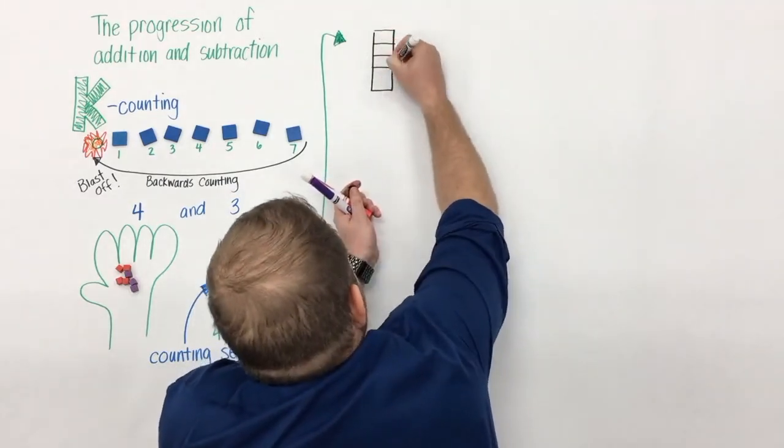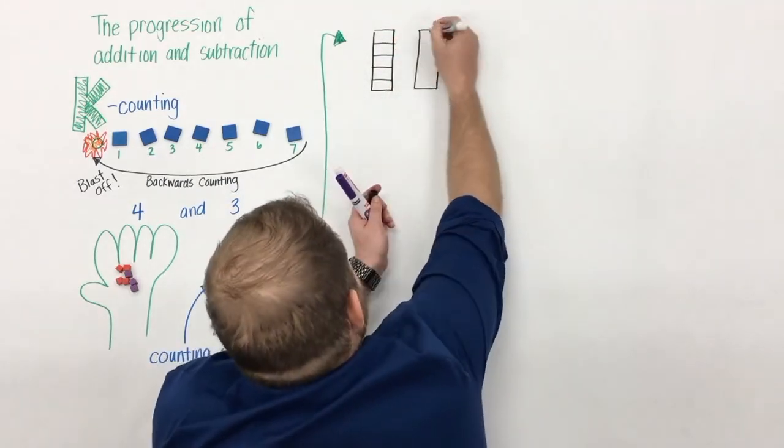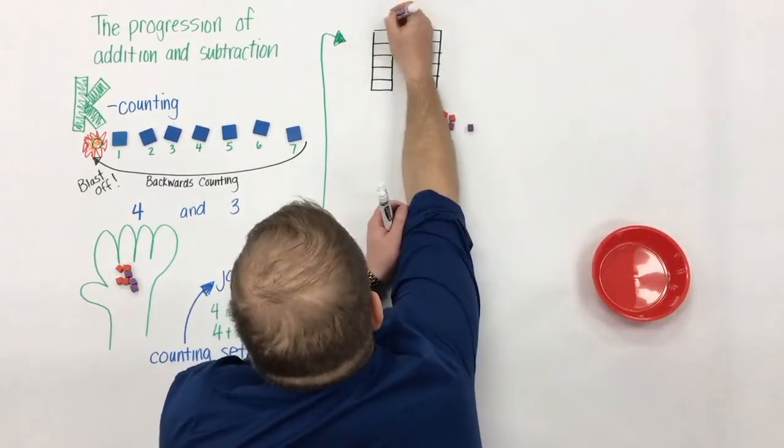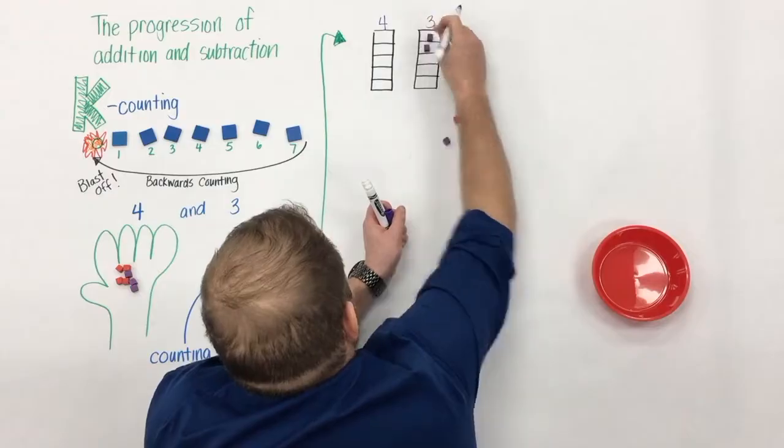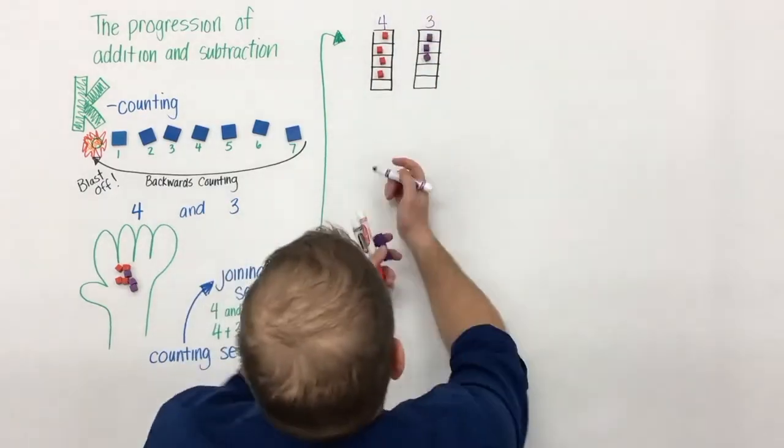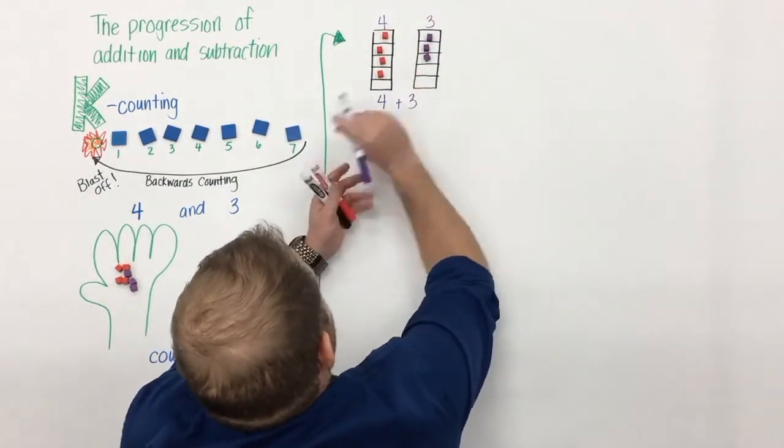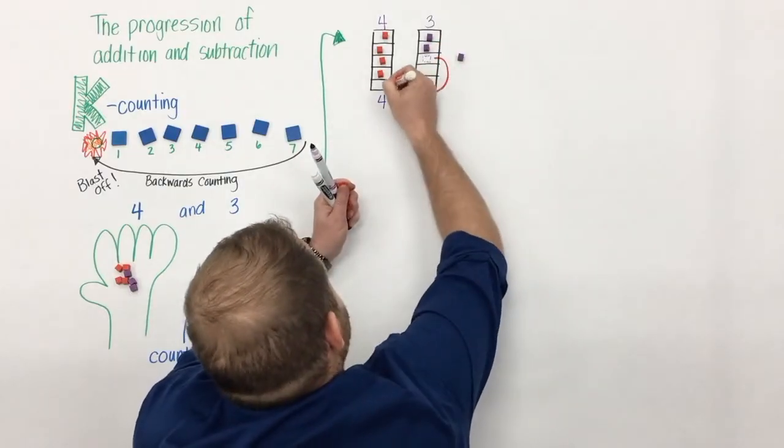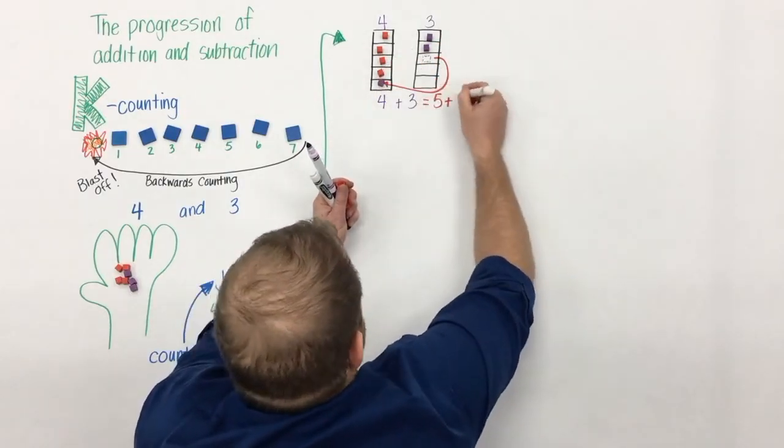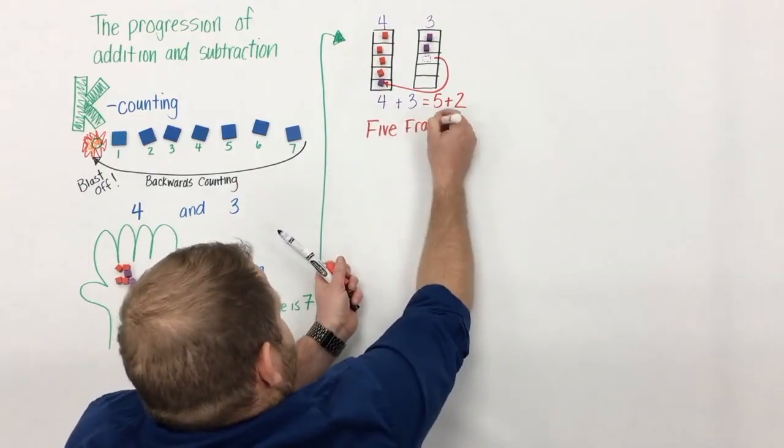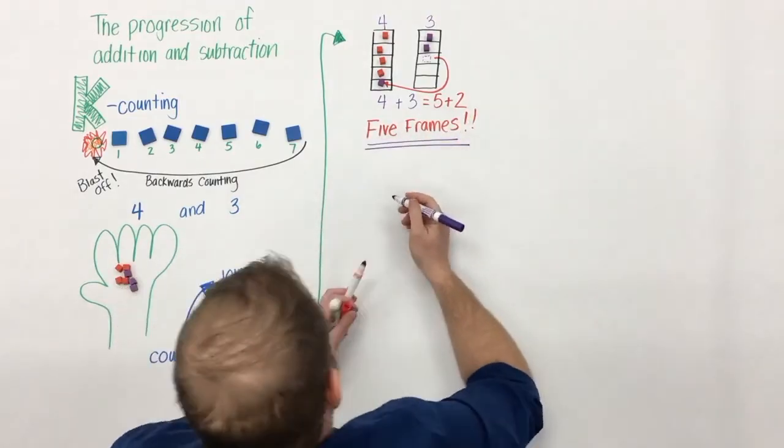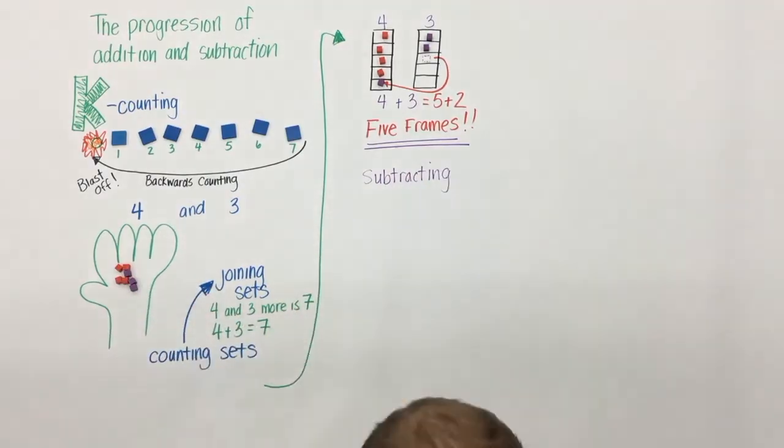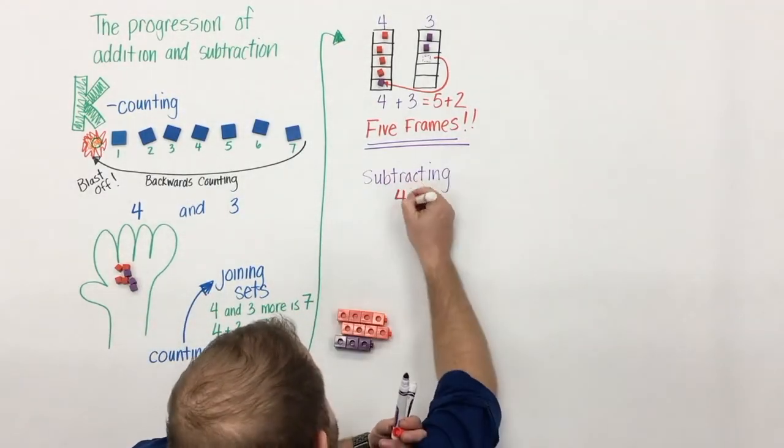As students begin to work on this idea of joining sets, we introduce five frames. And to be honest, I don't know if they get enough play in the early grades. So we'll have four and three, and students begin to build an understanding of five frames and filling up a five frame. Students can see that four plus three is the same as five plus two. And this understanding will build with students when they begin to use 10 frames later on.